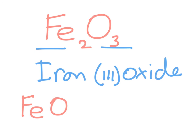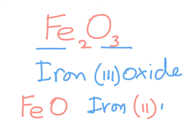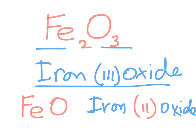Compare this with FeO. In this case, we say iron again, but the oxidation state of oxygen (2) is balanced by iron's oxidation state of 2, so we write a 2 and then say oxide — iron(II) oxide. These are very different compounds: iron(III) has a blackish color, while iron(II) has a red-brown color. That's how we name any compound from the transition block or D block.